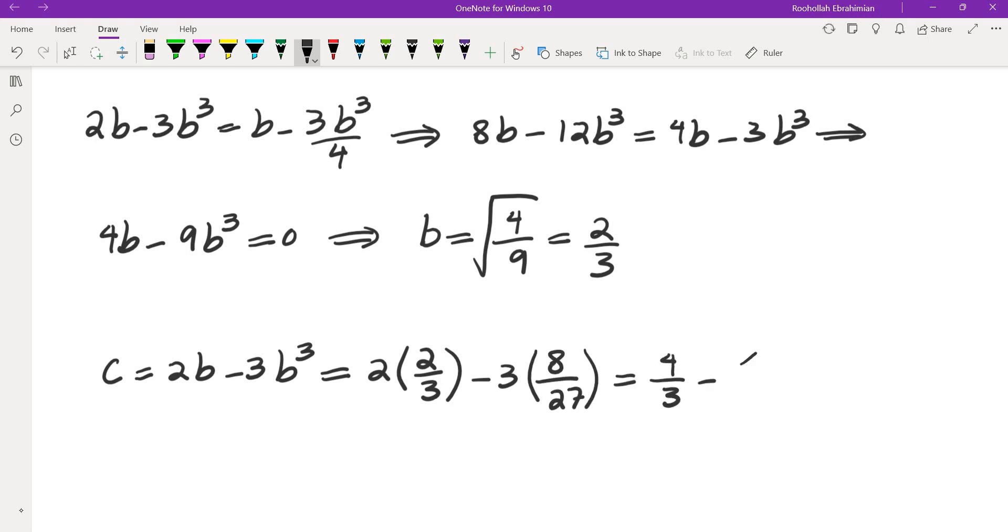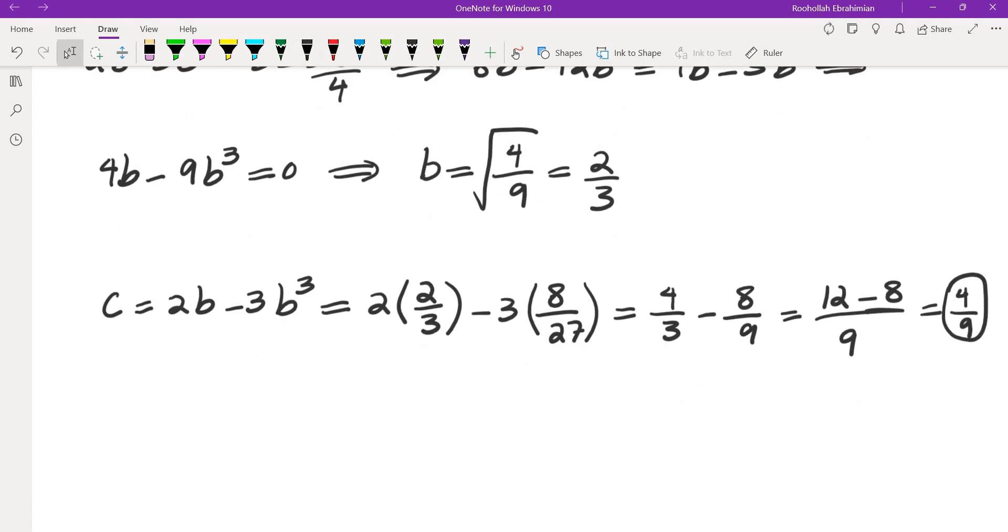So that's 4 thirds minus 8 over 9. We'll take the common denominator. We get 12 minus 8, which is 4 ninths. So the answer is 4 ninths. I will see you in the next video.